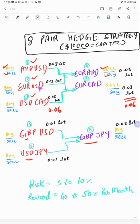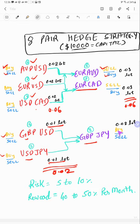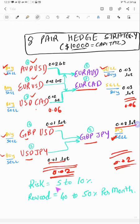AUD will be linked with EUR/AUD; EUR/USD will be linked with both cross pairs; similarly USD/CAD will be linked with EUR/CAD. For GBP/USD and USD/JPY we will trade with 0.01 lot each — total lot will be 0.02 on the buy side — and if both pairs are on the buy side, we will sell GBP/JPY with the same 0.02 lot size. In the hedge, both lot sizes remain the same, and the risk remains at 5 to 10%, with a 40 to 50% reward per month. This is the eight-pair hedge strategy.